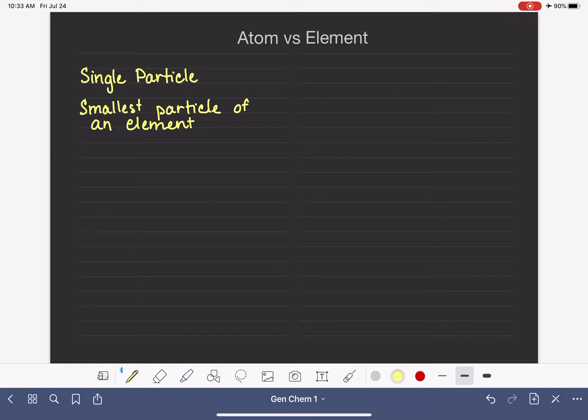An element is one or more identical particles, and those particles are atoms. This is one of the reasons why this definition is confusing - there's a lot of overlap between atom and element. An element is also defined as the most pure and simple form of matter.